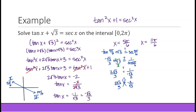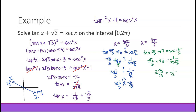Checking x equals 11 pi over 6: tangent of 11 pi over 6 is negative radical 3 over 3, so negative radical 3 over 3 plus radical 3 gives 2 radical 3 over 3. Secant of 11 pi over 6 equals 1 over cosine of 11 pi over 6 — in quadrant 4 cosine is positive, so we get 1 over positive radical 3 over 2, which equals 2 radical 3 over 3. It checks out. So the only solution is x equals 11 pi over 6.